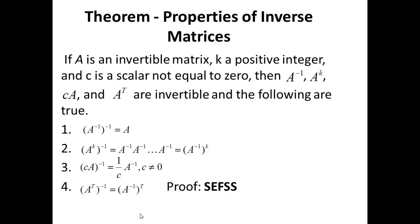Theorem: Properties of Inverse Matrices. If A is an invertible matrix, k is a positive integer, and c is a scalar not equal to zero, then A inverse, A raised to the power k, c times A, and A transpose are all invertible and the following are true.